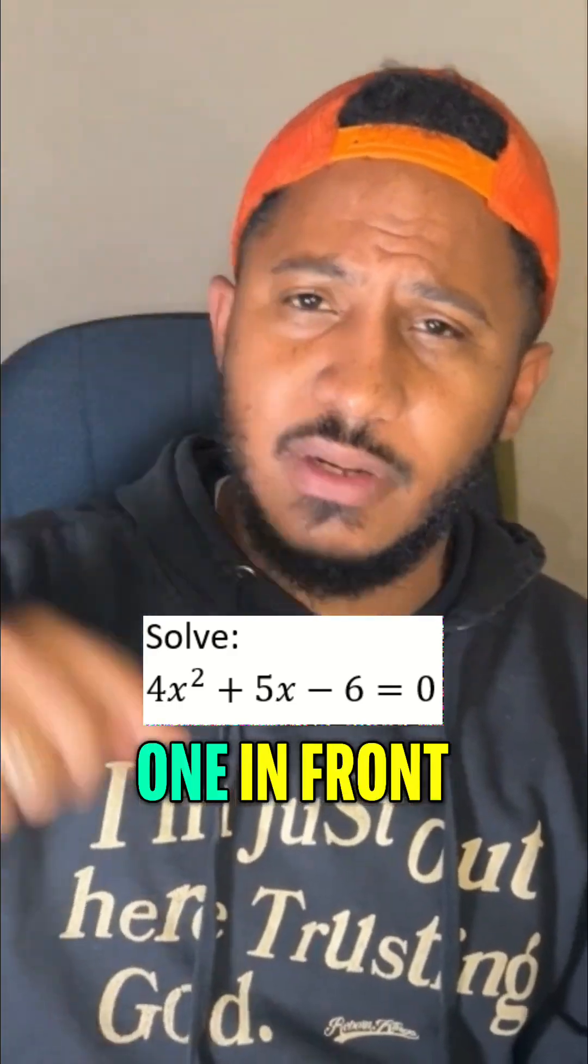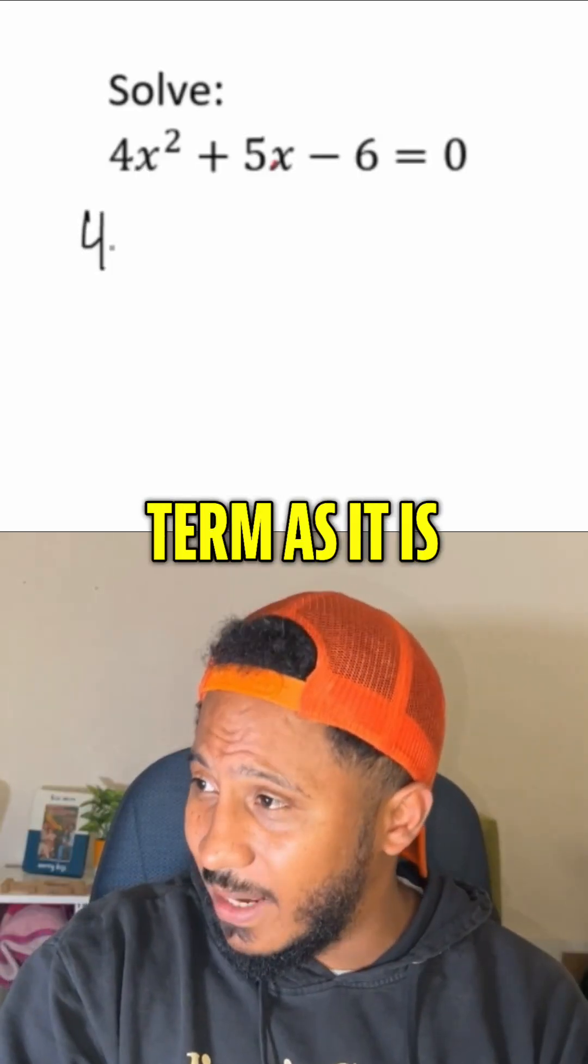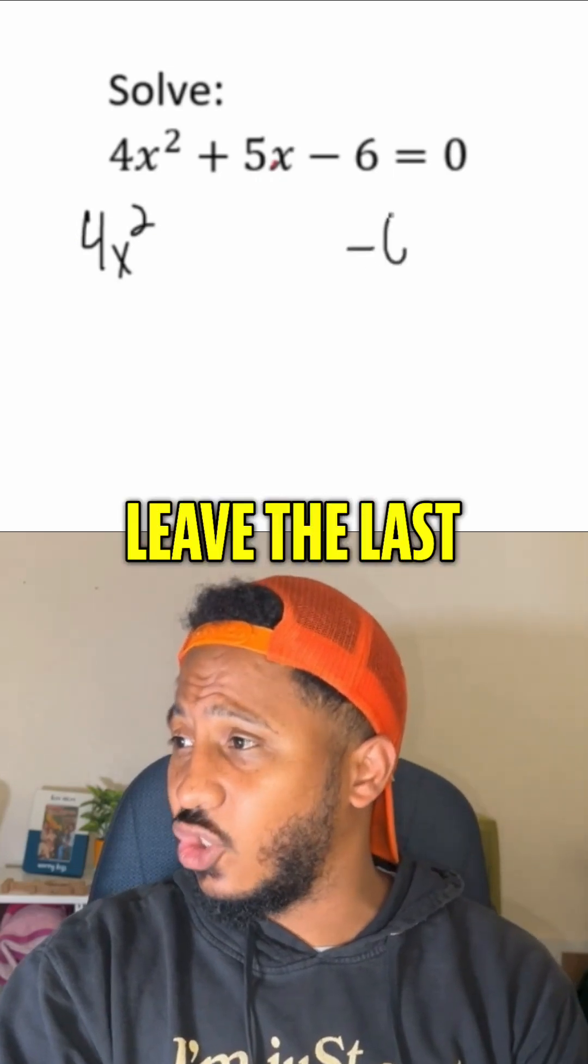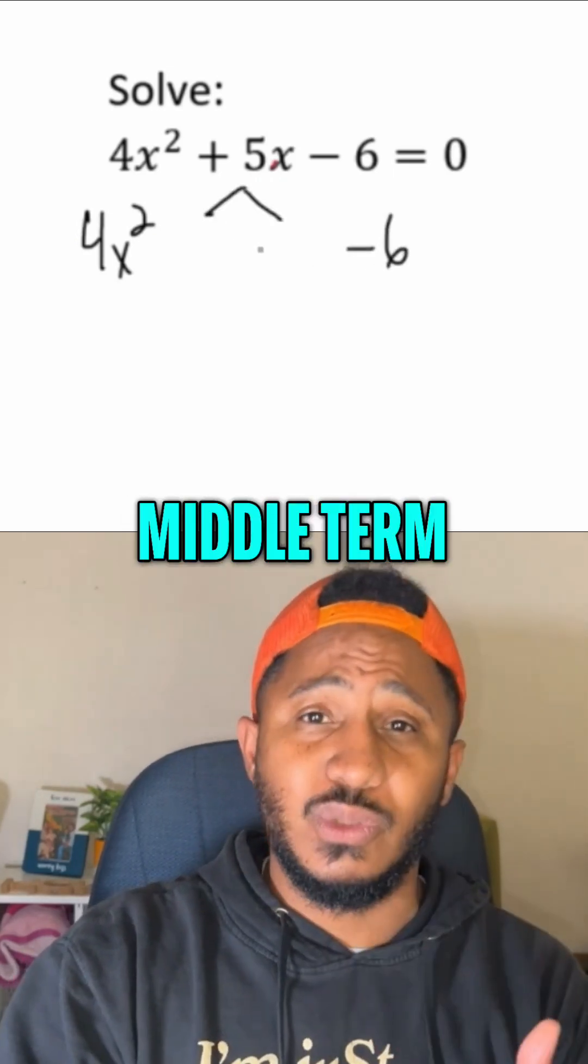It's three terms, but there's not a one in front. So instead, let's use what's called the AC method. We'll leave the first term as it is, leave the last term as it is, and the AC method says multiply A times C to rewrite this middle term.